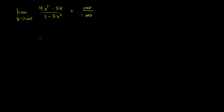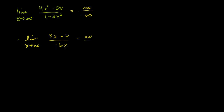So if this limit exists, or if the limit of their derivatives exists, then this limit is going to be equal to the limit as x approaches infinity of the derivative of the numerator. The derivative of 4x squared is 8x minus 5, over the derivative of the denominator: the derivative of 1 is 0, and the derivative of negative 3x squared is negative 6x. When you evaluate at infinity, the numerator approaches infinity and the denominator approaches negative infinity — so this is still negative infinity.